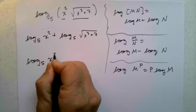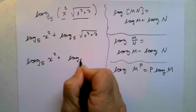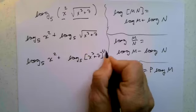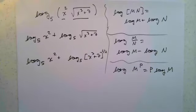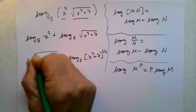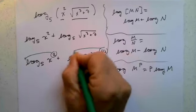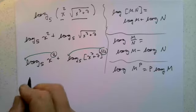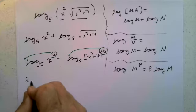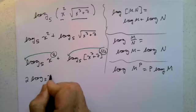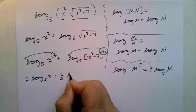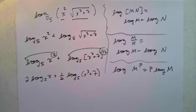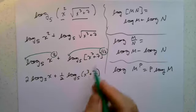So we have log base five of x squared plus log base five of x cubed plus seven to the one-half power. Now we can pull the exponents down: the two comes in front and the one-half comes in front, giving us two times log base five of x, plus one-half times log base five of x cubed plus seven. There's nothing else we can do.